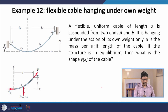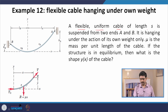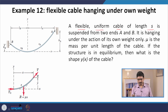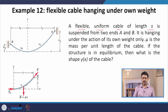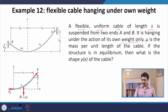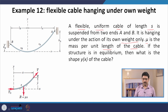Let us define the problem. We have two ends A and B, and a flexible uniform cable of total length S is suspended from those two ends, hanging under the action of its own weight only, with no other extra force. Mu is the mass per unit length of the cable.